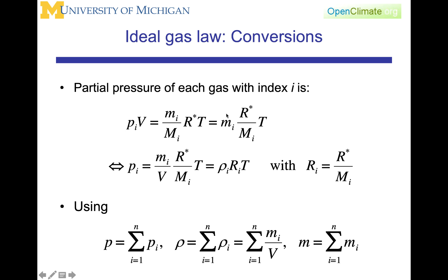The partial pressure of each component I is P sub I equals mass over molecular weight times the gas constant times temperature. Rewriting this equation, pulling M out for mass, we get M over V times R star over MI times T, where MI over V is the density. We define R star over MI as the gas constant for that particular gas.